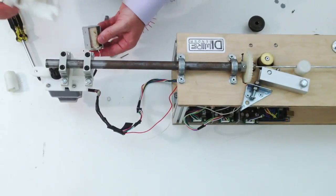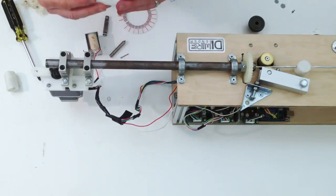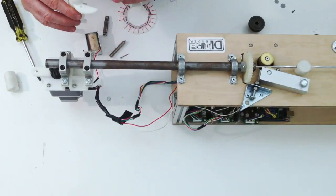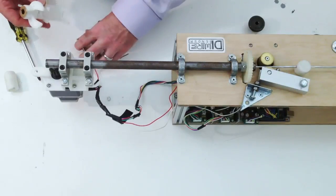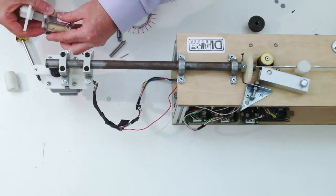Then you have the solenoid and the solenoid clip here and this is a brass bushing that we just push in there just to make it nice and smooth. The solenoid just clips in here.